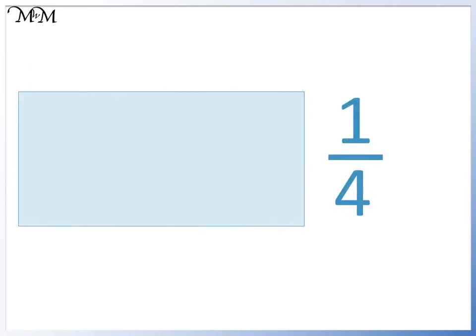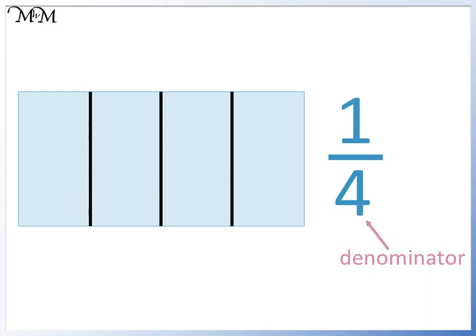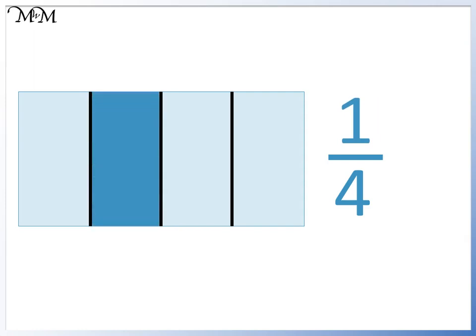Here's another example. Shade in one-quarter of this shape. The denominator is 4, so the shape must be split into four parts. The numerator is 1, so we shade in one part. We have shaded in one part out of four.